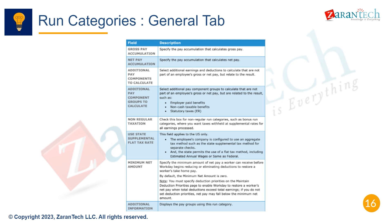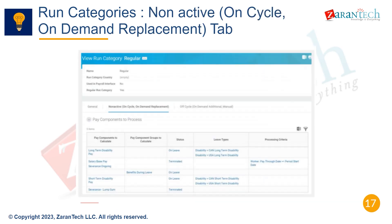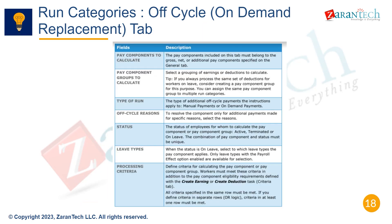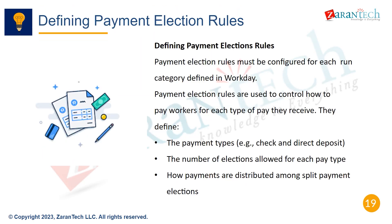More general configurations like banking files, positive pay files, and accounting defaults are defined in Run Categories. The Non-Active tab specifies actions for on-cycle and on-demand replacement runs.